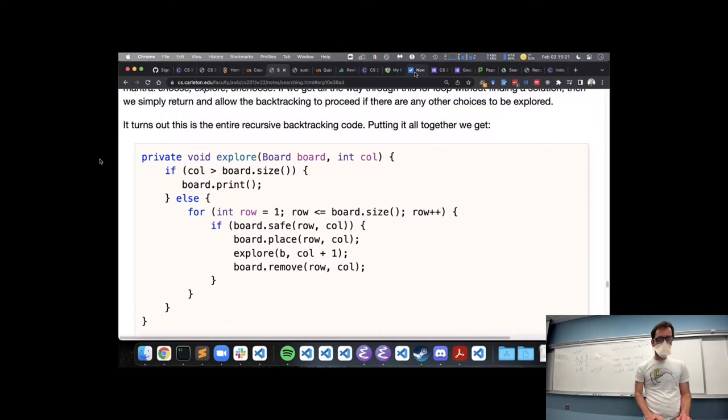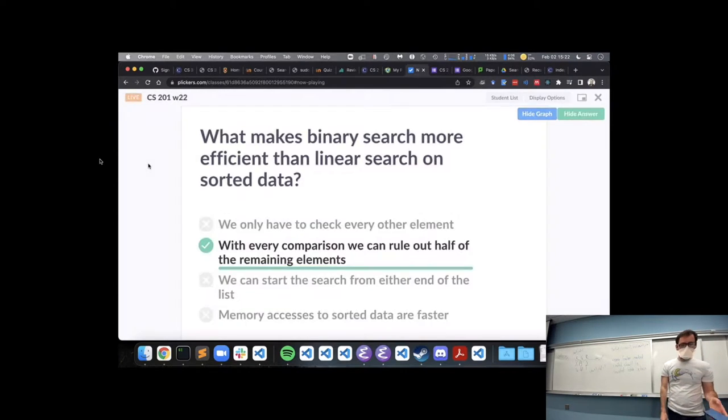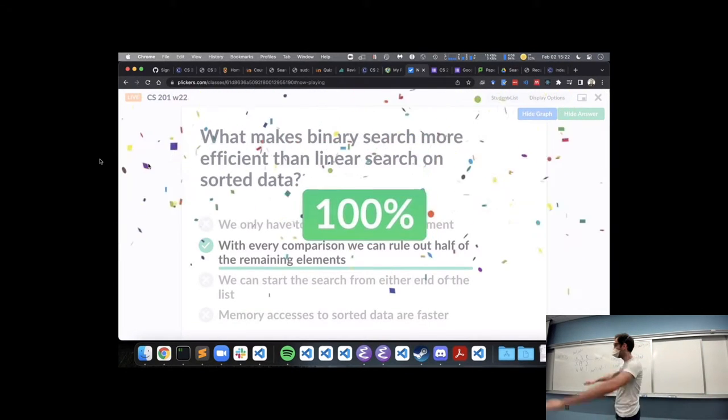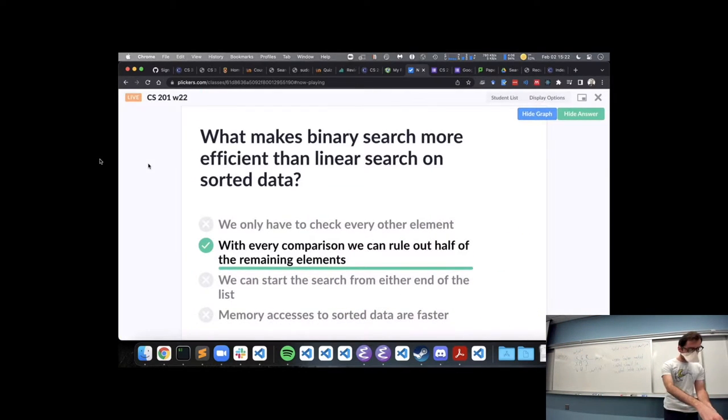Alright, let's get to practice. So first up, we talked about binary search and compared it to linear search. What makes binary search more efficient when we have sorted data? Amazing! 100%. Yay! Yes, we get to rule out half when we do binary search. It gives us our log n spots we have to check.